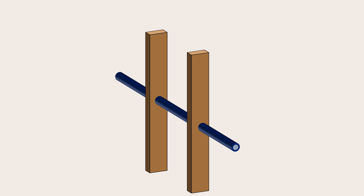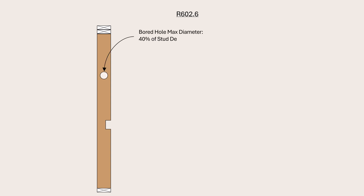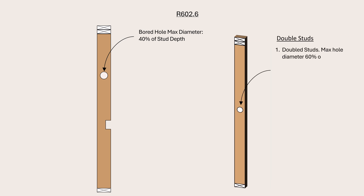Let us now look at the limitations and guidelines on notches and holes at bearing walls. In addition to supporting load, wall studs may also be required to accommodate the installation of both electrical and mechanical distribution systems. This is accomplished by notching and boring holes through the studs to facilitate the passage of pipes and conduits. The requirements for drilling holes and notching of wall studs are provided in Section R-602.6 of the Residential Code. For exterior walls and bearing walls, the first limitation is that the hole diameter must not exceed 40% of the stud depth unless the stud is doubled.